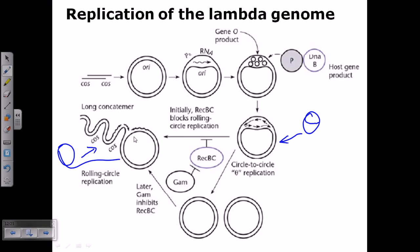and then the rolling circle mode of replication. Usually it's a general process of lambda genome to carry out the theta mode of replication after taking entry inside the host cell. For example, here